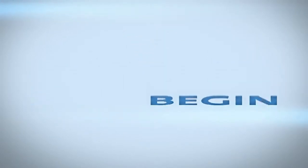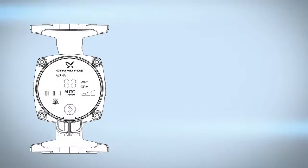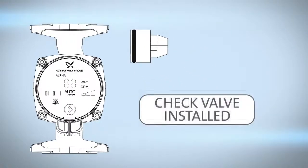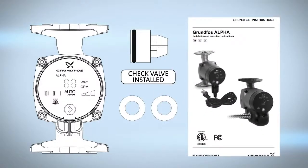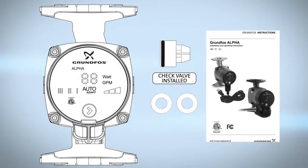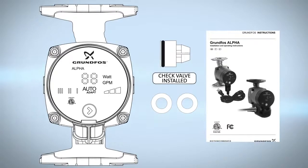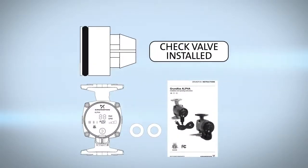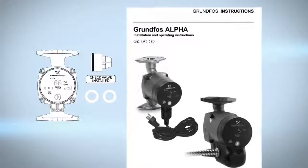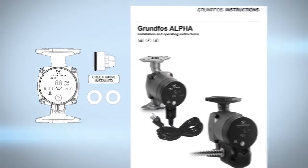Let's begin. Before beginning circulator installation, examine your Alpha components carefully to make sure no damage occurred to the pump during shipment. Included you will find one Grundfos Alpha pump with either a line cord or terminal box connection, two gaskets, one check valve and check valve installed sticker, and written installation and operating instructions.